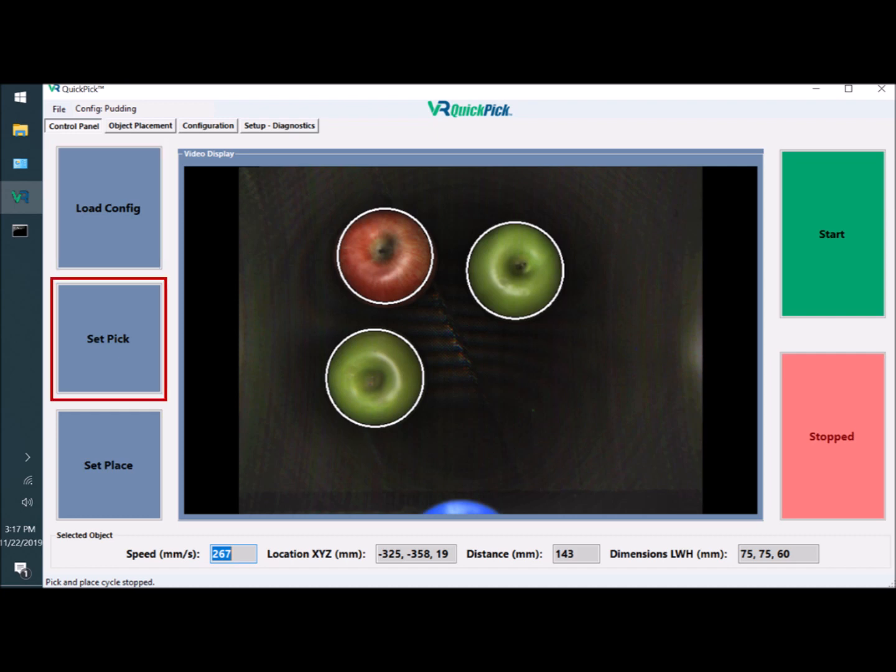Once you've loaded a configuration, you set the pick zone, which is to say the field of view where the objects to be picked will be found. They can be stationary or moving, as long as they are visible in the selected pick zone.